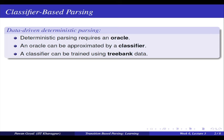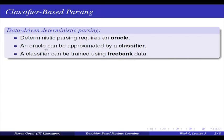We are talking about data-driven deterministic parsing. Deterministic parsing requires an oracle. The oracle is nothing but the set of configurations and the set of transitions taken — this we have already seen in the last lecture. We want to approximate it by a classifier, which will be trained using the tree bank data. We will use the labeled data for two different tasks: first, for building the oracle — configuration, transition, configuration, transition; and second, to learn the weights of my classifier.